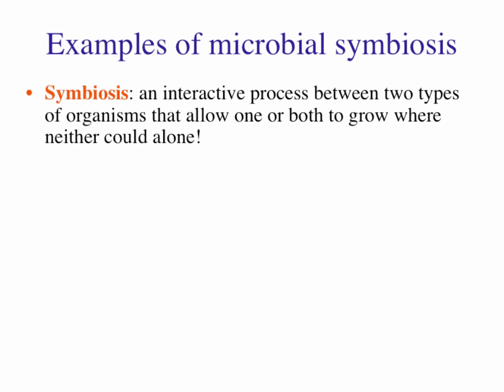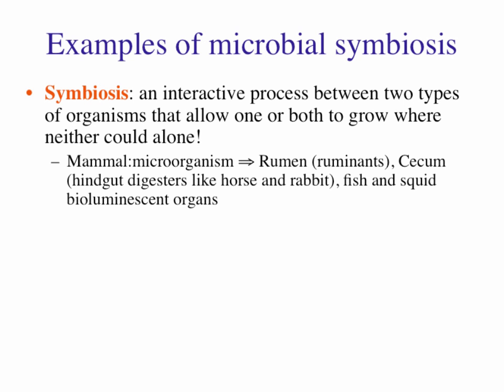We have many examples of symbiosis in the microbial world. For example, we have mammals and microorganisms. All of us have microorganisms in our gut—either in the rumen like in ruminants, the cecum which is the hindgut in horses and rabbits, and of course our own intestines. When you learned about quorum sensing, you learned from Dr. Bassler about the squid symbiotic relationship with bacteria. There are also other fish with bioluminescent organs where microorganisms live, benefiting both.